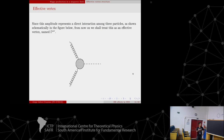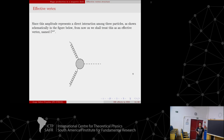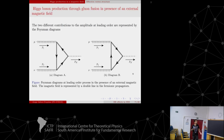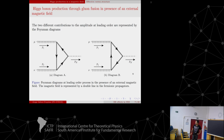I will calculate what I call the effective vertex. Since we have two gluons, which are vector bosons, this object carries two Lorentz indices. The two leading-order diagrams have the two gluons in the initial state and a Higgs as a final state. Here, the presence of the electromagnetic field is represented by these double lines on the quarks — this is a loop of quarks that drives the process.